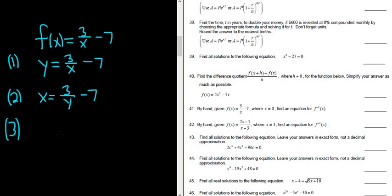So to solve this for y, we probably want to isolate this term here. So we'll start by adding 7 to both sides. So plus 7 plus 7. These cancel, so we get x plus 7 equals 3 over y.